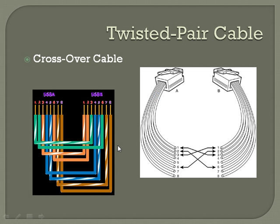The crossover cable is used when connecting a switch to a switch. It doesn't cross over on every pin, but the pin-out shows pin one going to pin three, pin two going to pin six, and so on. Some pins like four and five are still straight through, but on pins one, two, three, and six you have a crossover.